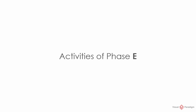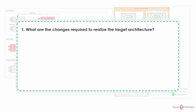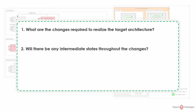Activities of Phase E. In phases B, C and D, you performed gap analysis. You know what components will be added and removed, but there are still some questions you need to answer before you can go realizing the differences. First, you know there are new components, but what exactly has to be done to produce them? Same for removal — how will the components be removed from the architecture? Will there be any migration activities? Do you expect any intermediate states between the baseline and target? And what is the time frame of changes?